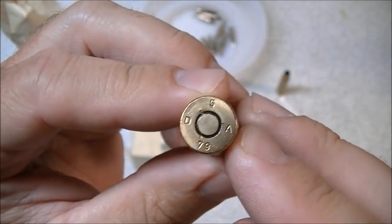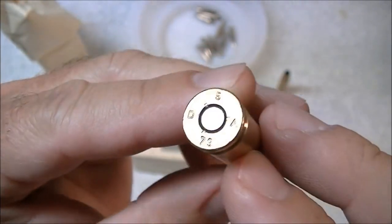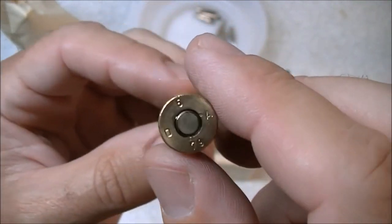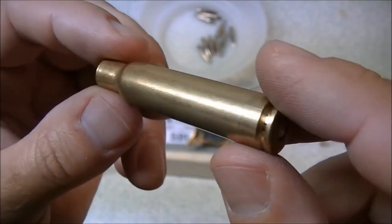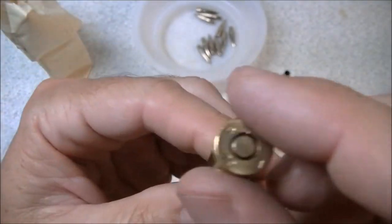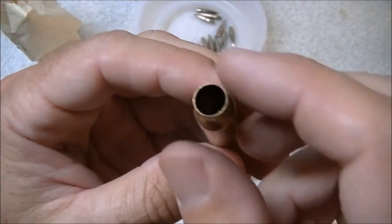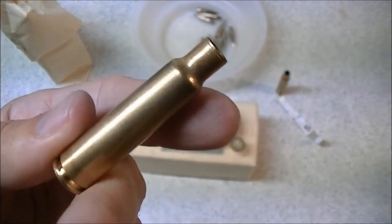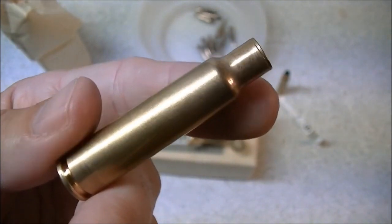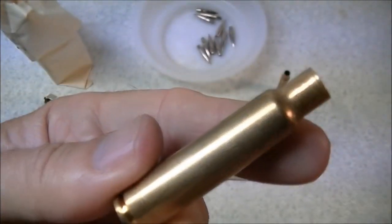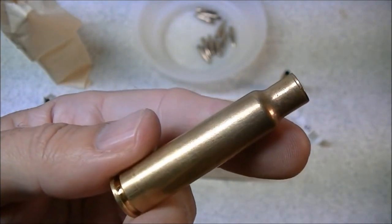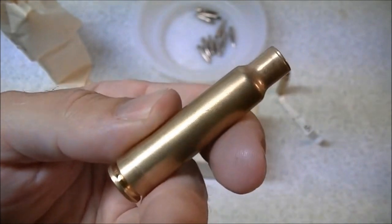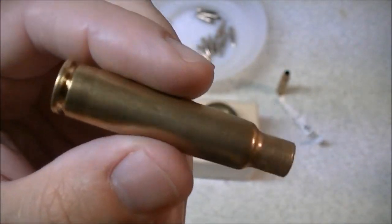And they are Berdan primed, they are not a Boxer primed case, which is kind of unfortunate because it appears to be very high quality brass. And unfortunately being Berdan primed it is not easily reloadable. You can get Berdan primers in some places. They are not easily available where I live. At this point in time I'm just going to shoot this stuff and keep the brass around just in case I do come across some Berdan primers. I think it would be worth the effort to reload it if I could find some. I'm just going to keep it in case I find any. There is reloadable brass around for this, Boxer primed, so I'm not at a loss to assemble reloads.